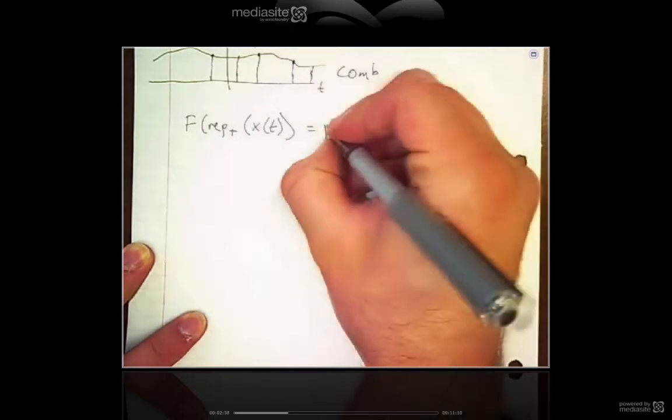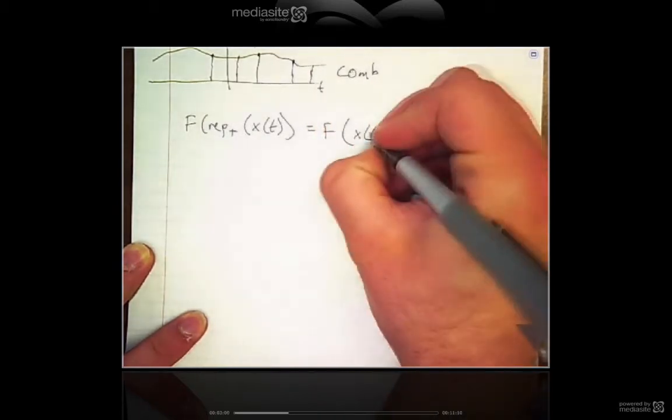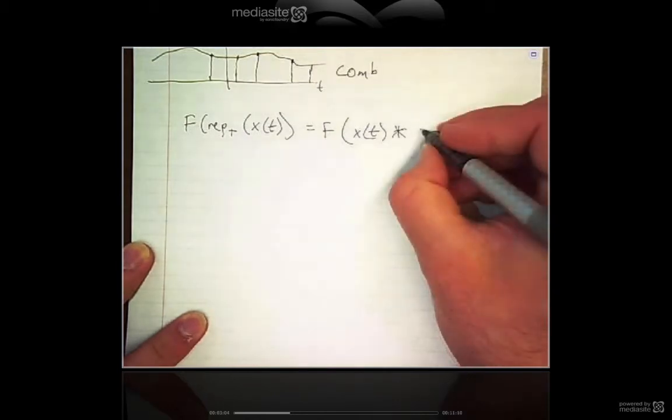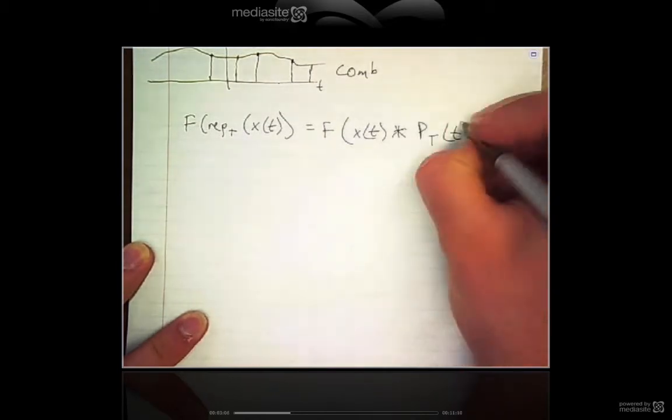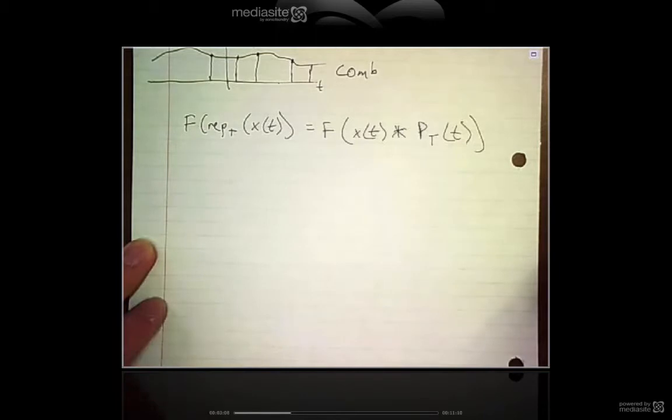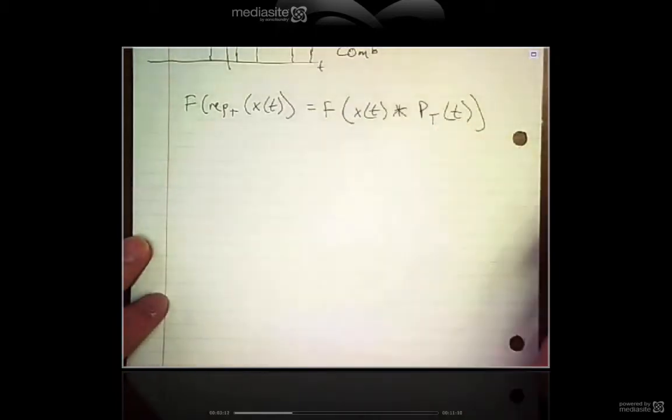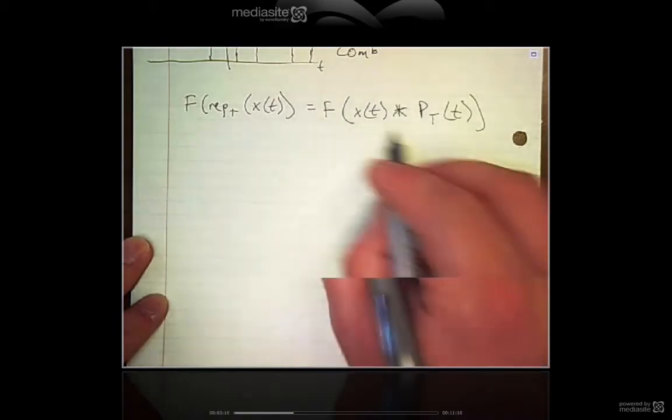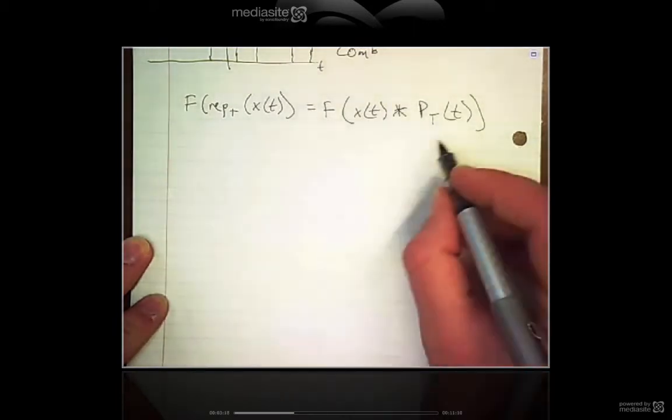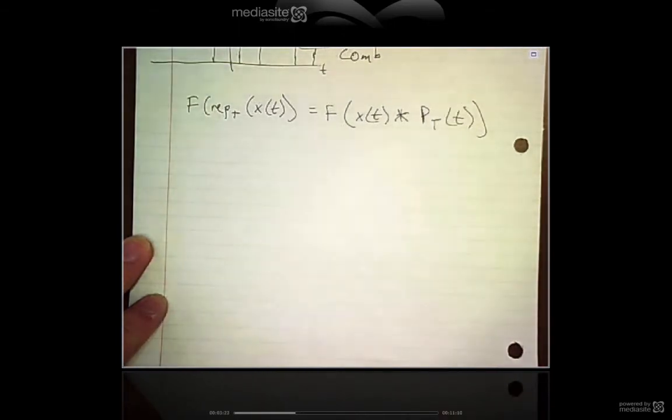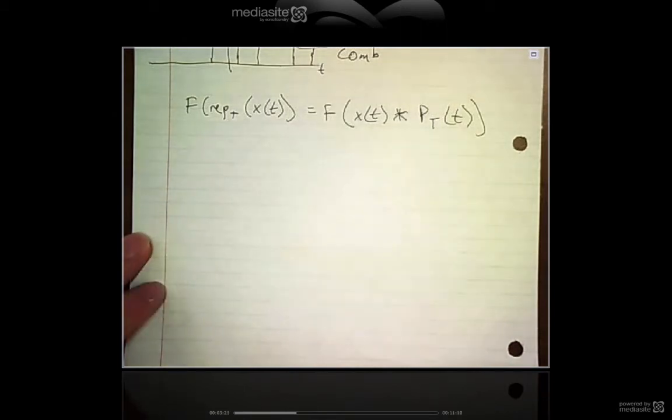It's going to be the same thing as taking your original signal and convolving it with an impulse train of period T. To find the Fourier transform of this whole rep, you need to take the Fourier transform of the signal and multiply it by the Fourier transform of the impulse train, because convolution in the time domain is equivalent to multiplication in the frequency domain.